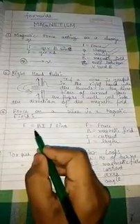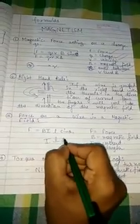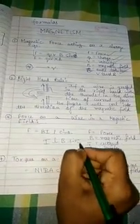So next is force on a wire in a magnetic field. It is F equals BIL sine theta, or ILB sine theta. In that, F is force, B is magnetic field, I is current, L is length. Okay, next.